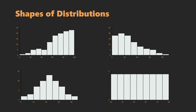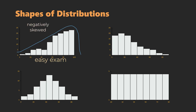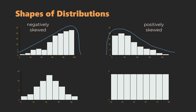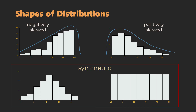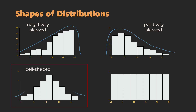We often classify frequency distributions based on the shape of their histogram. If more observations cluster around higher values, we say the distribution is negatively skewed — the tail extends to the left; an example would be scores on an easy exam. If frequencies are higher for lower values and the tail extends to the right, we have a positively skewed distribution, such as scores on a difficult exam or income. Symmetric distributions, if cut in half, have identical left and right sides. The bell-shaped distribution and the uniform distribution — where all bars have the same height — are both symmetric.